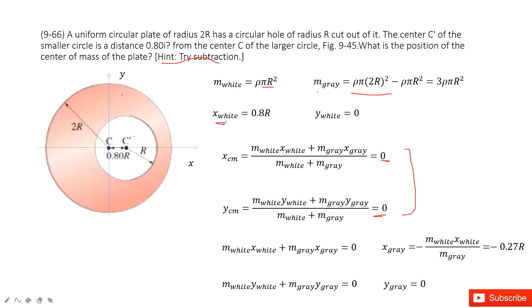And then, this one is given. The center of mass for the white is 0.8R. And the white part, the y component for center of mass for white is 0.